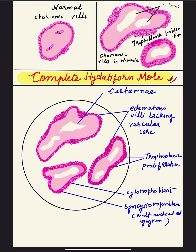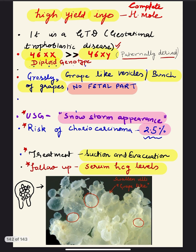Hello and a warm welcome to everyone. Today the session is about how to draw a diagram of complete hydatidiform mole. Before going into the diagram, let's revise some important points regarding the H mole. Hydatidiform mole is a gestational trophoblastic disease. Various GTDs include complete H mole, partial H mole, invasive mole, choriocarcinoma, and placental site trophoblastic tumor. For MBBS, the H mole is very important.